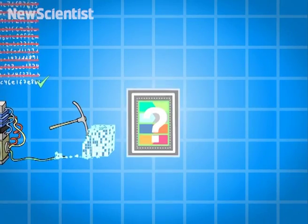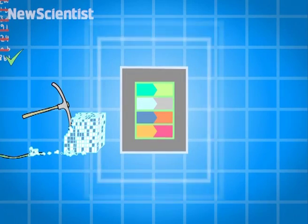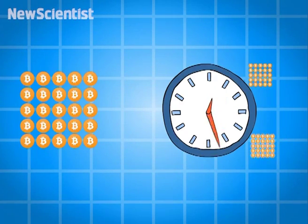But because mining is expensive, there's a reward. The first miner to solve each block gets to create shiny new Bitcoins for their trouble. And this happens roughly every 10 minutes.